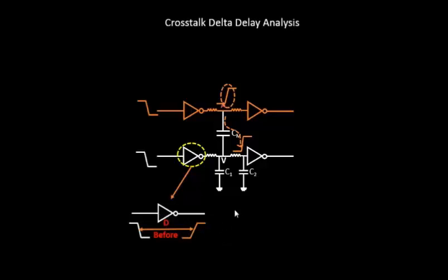Now when you see a crosstalk impacted victim over here, see what happens to the delay of the cell. This particular inverter had an input of this, but the output has got a better transition. As a result of that, this particular inverter is faster.